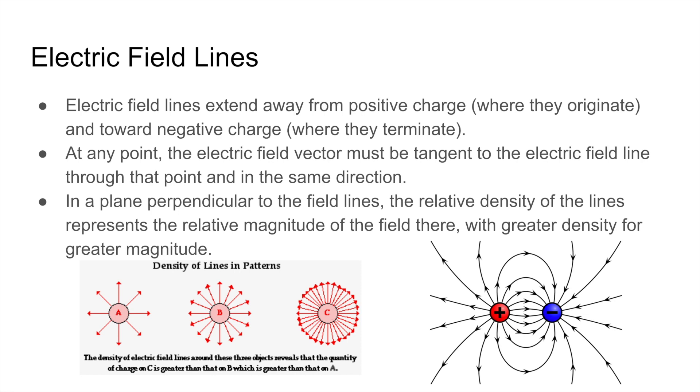Also, in a plane perpendicular to the field lines, the relative density of the lines represents the relative magnitude of the field there, with greater density for greater magnitude. So if you look at the image on the bottom left, since A has lower density of electric field lines than C, we can conclude that the electric field near C is greater than the electric field near A.